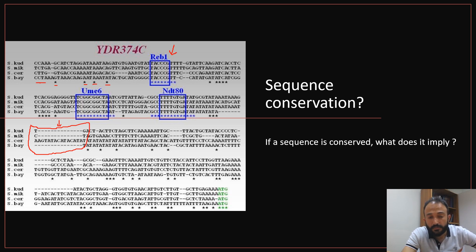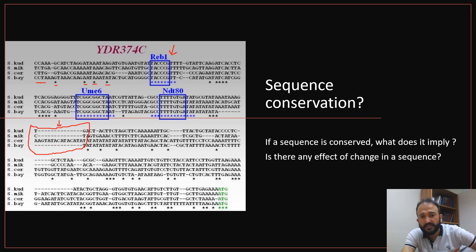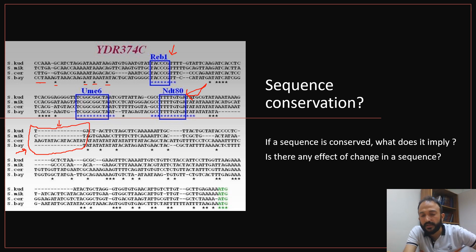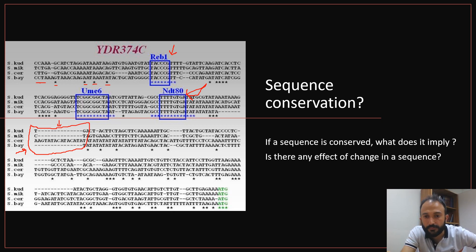However, there is no specific site in the variable region. So if there is a change in a conserved region, it will be very drastic because it will disrupt the binding or functional site. However, in the variable region there is no specific functional site, so it will not affect the overall functional structure of the protein. That's why sequence conservation is very important.